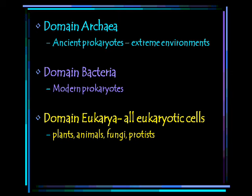Any organism made up of eukaryotic cells falls into domain Eukarya. In Eukarya, we have plants, animals, fungus, and also protists. Protists are single-celled organisms that do have a nucleus, such as amoebas or plankton.